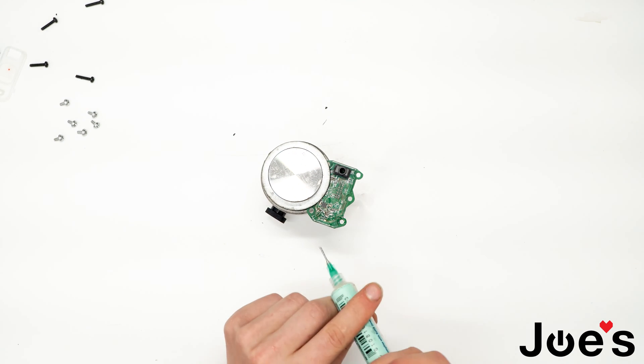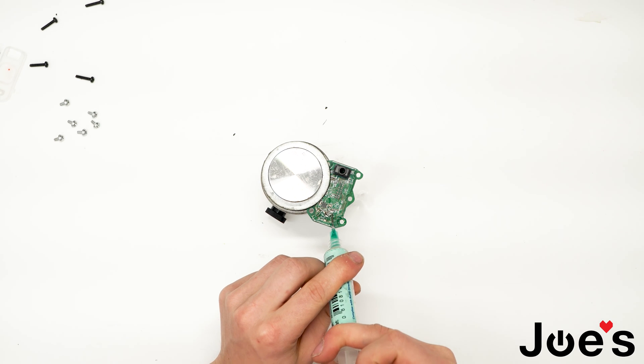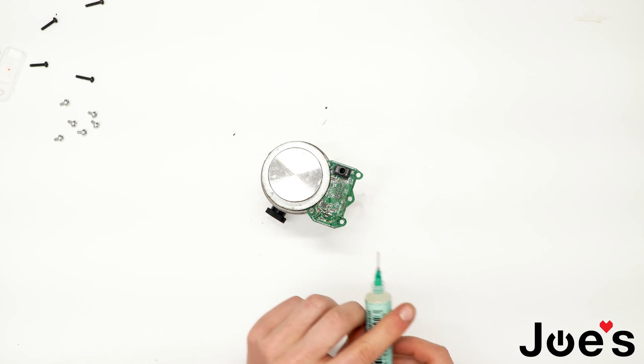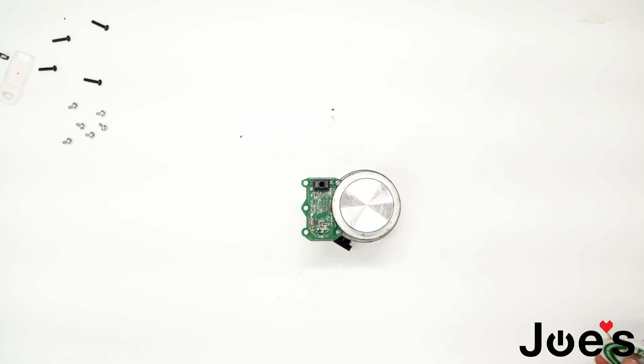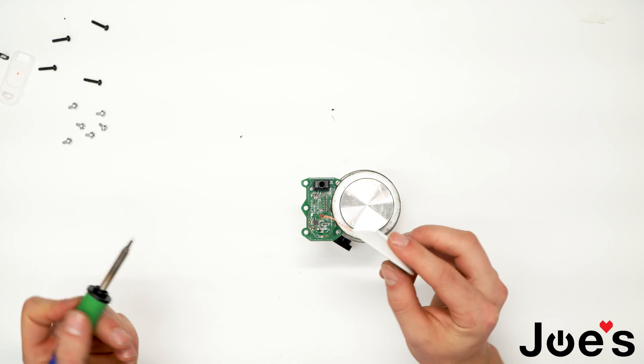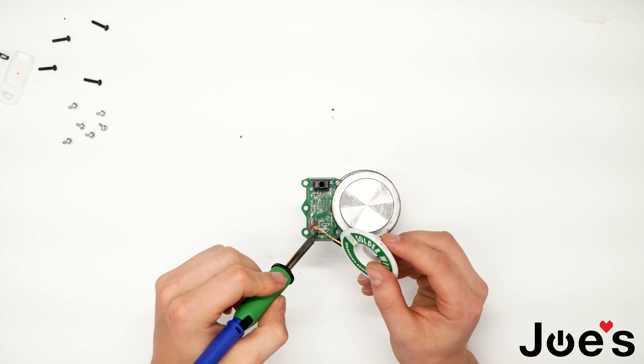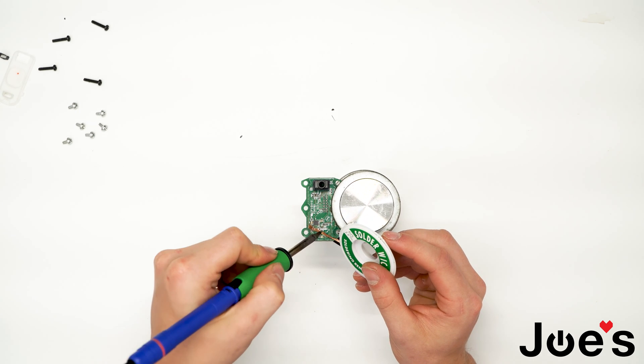Let's go ahead and add some flux to the anchor holes as well as the pads. And we're going to go ahead and remove any excess solder that's left behind. We can go ahead right now and pull out or soak up any of the leftover solder with a solder wick that is left in the anchor holes and on the pads.